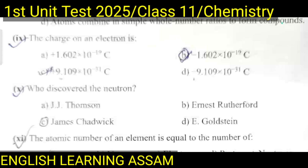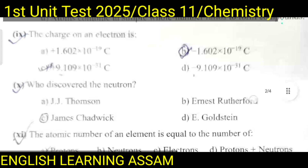Question number ten: Who discovered the neutron? A. J.J. Thomson, B. Ernest Rutherford, C. James Chadwick, D. E. Goldstein. The correct answer is C — James Chadwick.